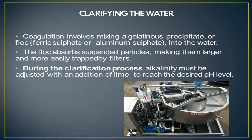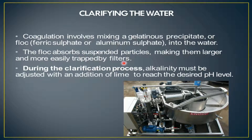The first step is clarifying the water. Coagulation involves mixing a gelatinous precipitate or flock — that is, ferric sulfate or aluminium sulfate — into the water. The flock absorbs suspended particles, making them larger and more easily trapped by filters. During the clarification process, alkalinity must be adjusted with an addition of lime to reach the desired pH level.